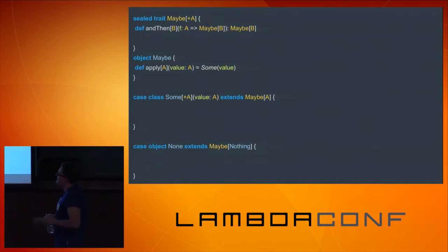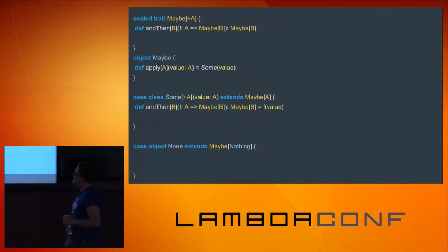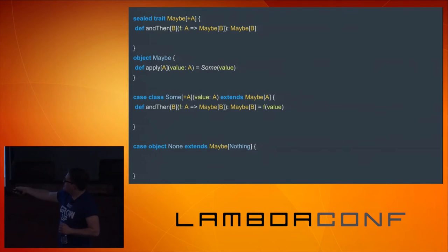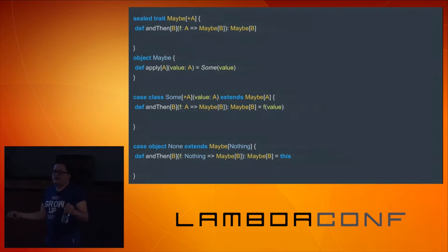andThen is a method that takes a function, and that function takes as a parameter our A, and returns a new Maybe with type B. And we return that Maybe B. So for Some, if we want to implement that signature, all we have to do is lift this value with our method F, and whatever is returned by this function F, we just return. Simple as that.